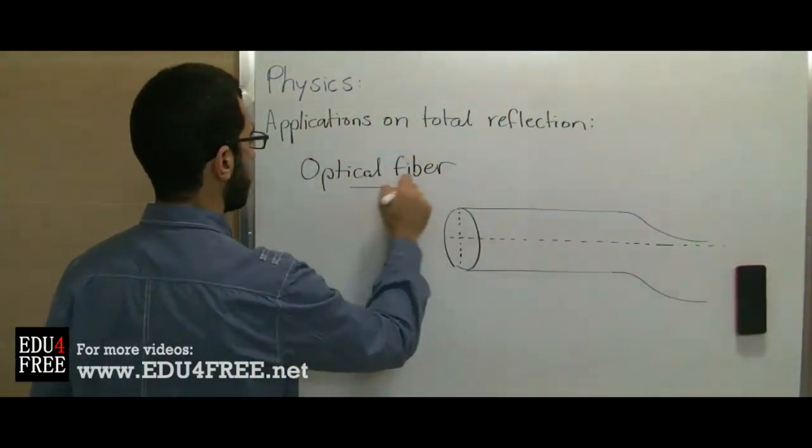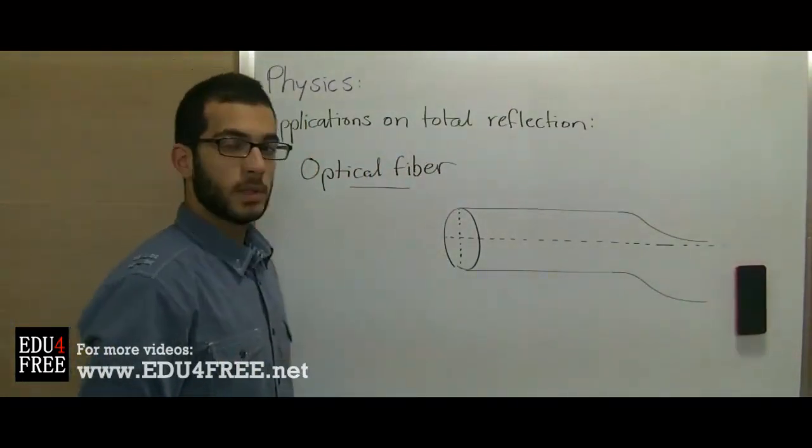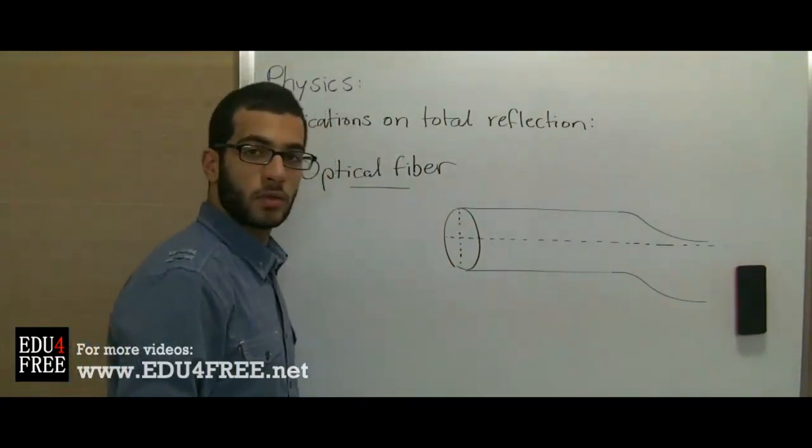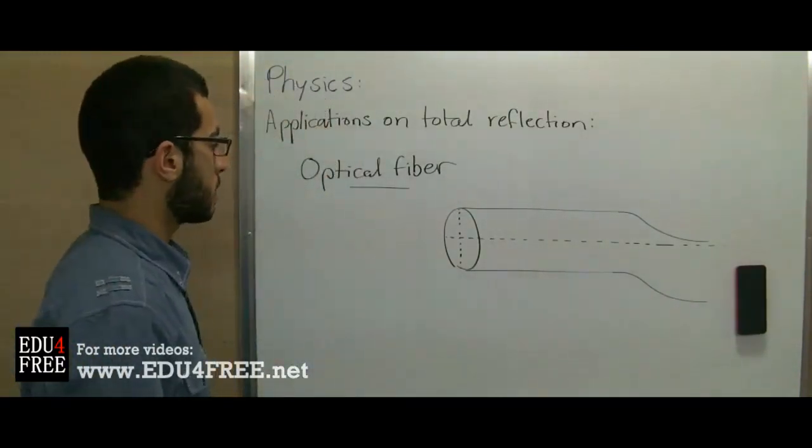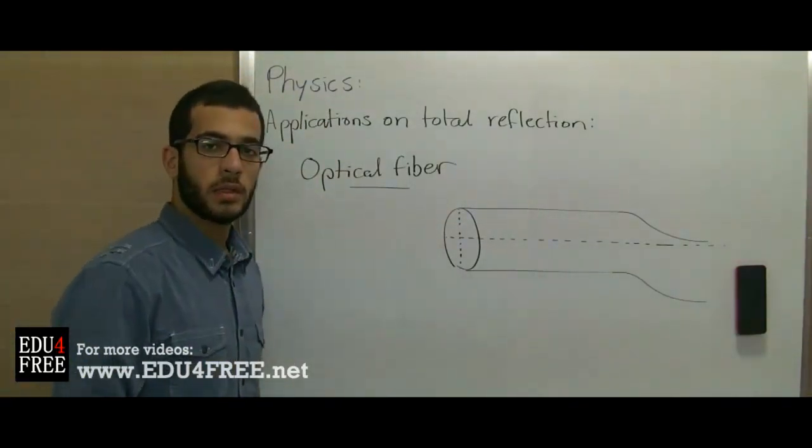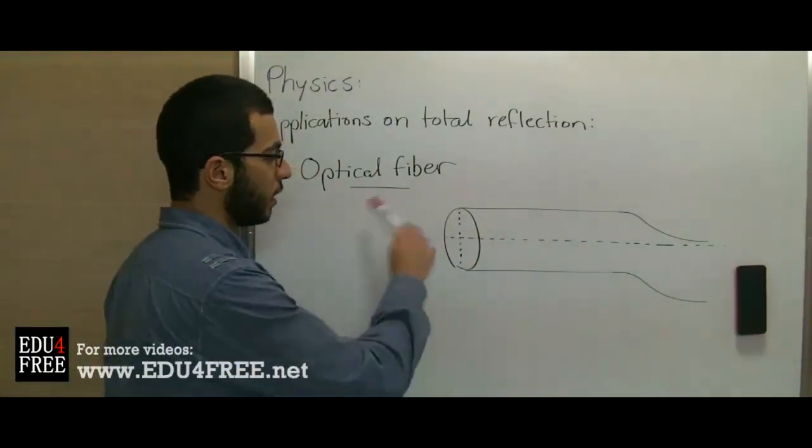Optical fibers are thin cylindrical thread-shaped fibers through which light is directed to move in non-straight lines. The idea of the optical fibers is to force the light not to move in a straight line, but to move in the path of the optical fiber.